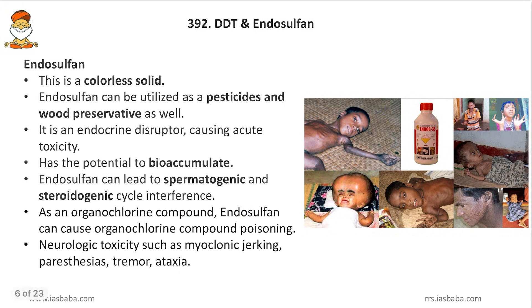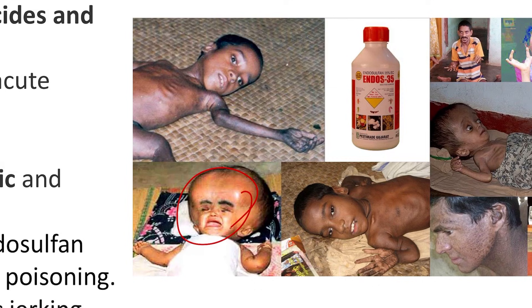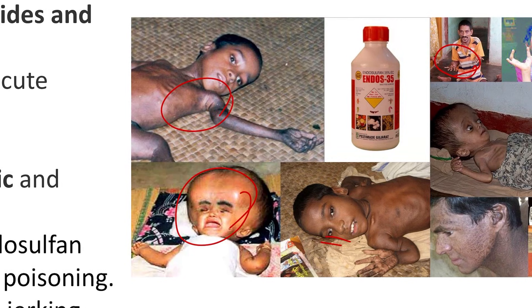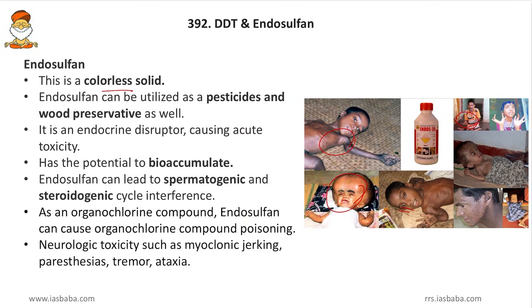Endosulfan is a colorless solid. In Kerala, the endosulfan victims issue has been ongoing for several decades. The side effects include macrocephaly (big head), cerebral palsy, and paralysis. Endosulfan can be used as a pesticide and wood preservative. It is an endocrine disruptor causing acute toxicity, with potential for bioaccumulation and biomagnification. It can interfere with the spermatogenic and steroidogenic cycle. As an organochlorine compound, it can cause organochlorine poisoning with neurological toxicity symptoms such as myoclonic jerking, paresthesias, tremor, and ataxia.